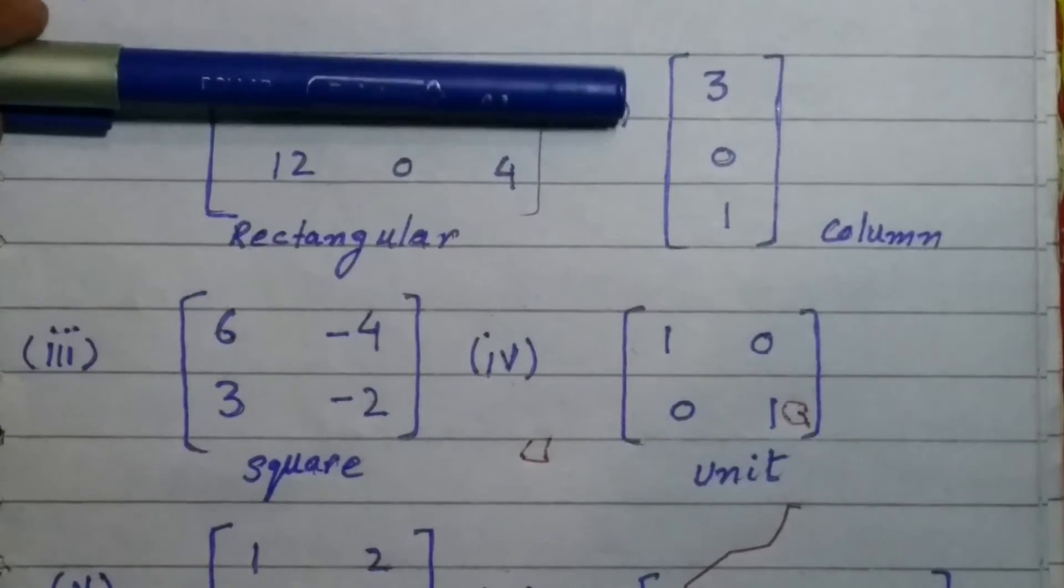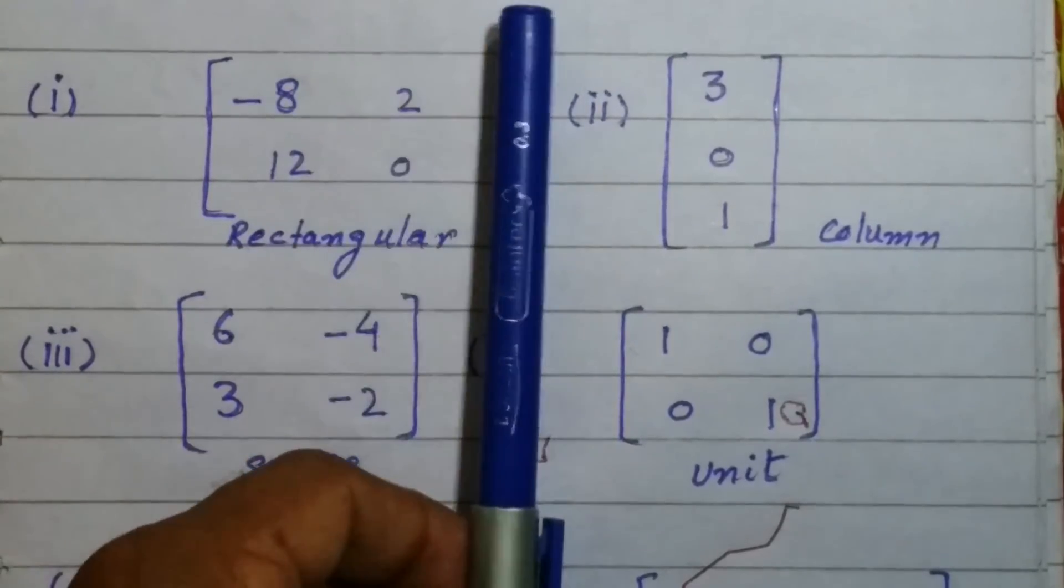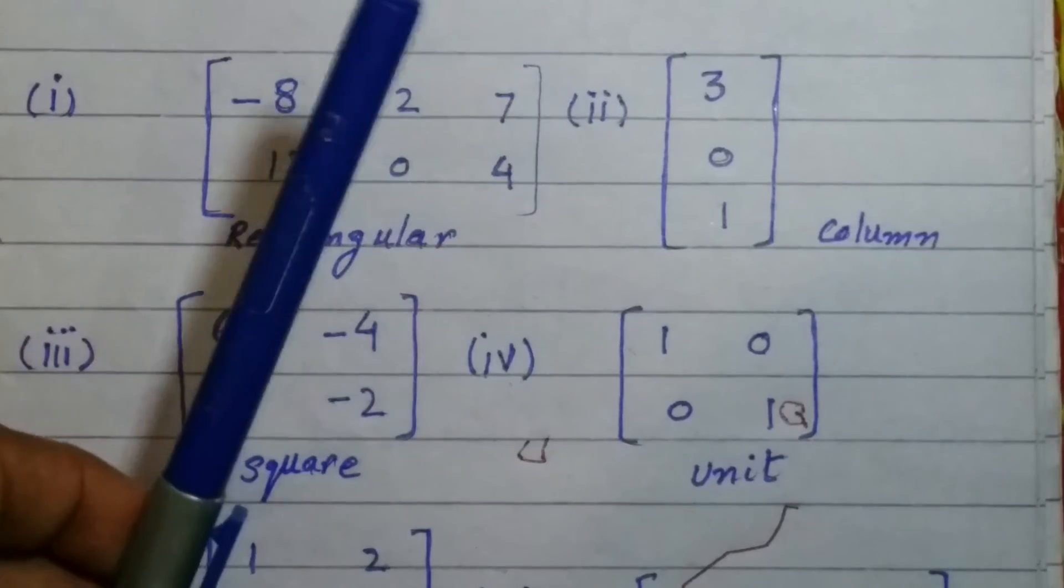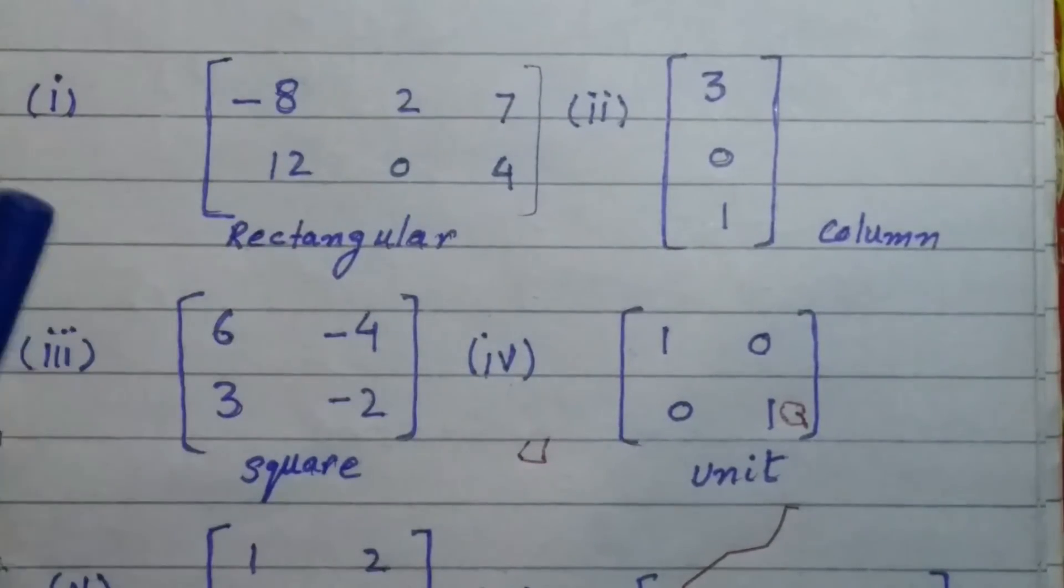Here there are two rows but three columns. If the number of rows is not equal to the number of columns, that is the number of rows are different to the number of columns.